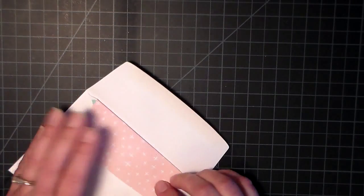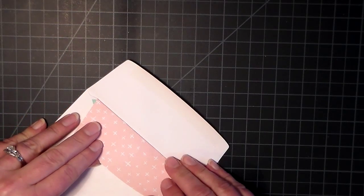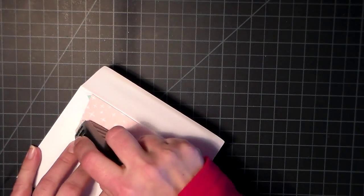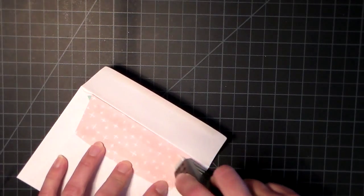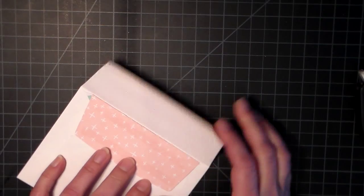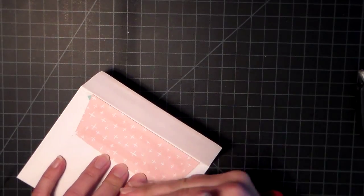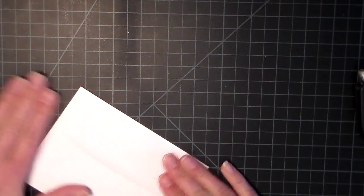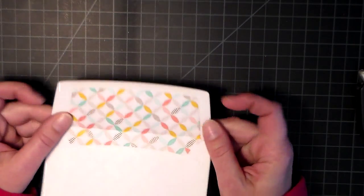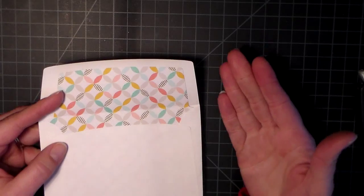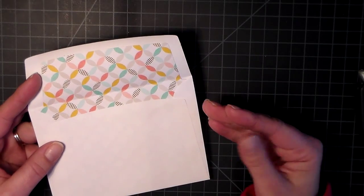I'm going to fold this flap over and use some really strong adhesive. I love this fast fuse adhesive, super sticky. Now all I need to do, fold that over and boom, done. That's how easy that really is to use and doesn't it give your envelope just a much more elegant look.